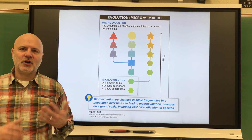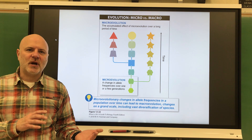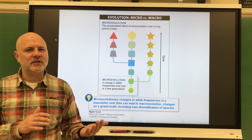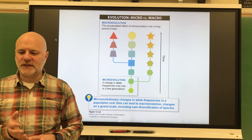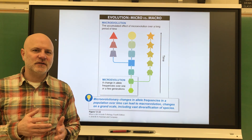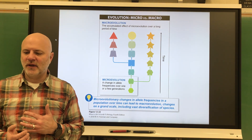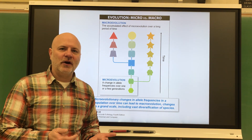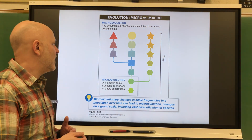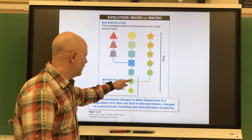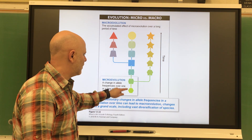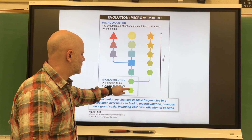Micro evolution is caused by the evolutionary processes we already talked about: natural selection, mutations, genetic drift, gene flow, and non-random mating. So here is what we're looking at with micro evolution — just going from here to here.